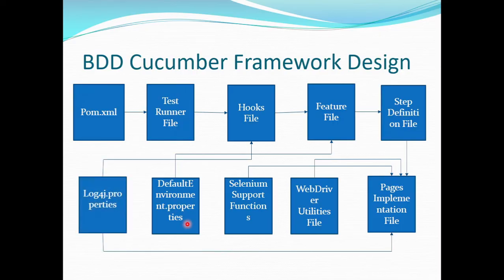Finally we have the log4j.properties file. The purpose of log4j in the automation framework is to capture the logs of the execution. Using the log4j.properties file, we implement log4j to get all the logs for the scenarios we are executing.